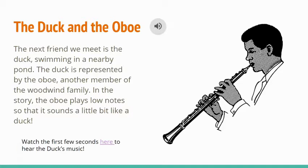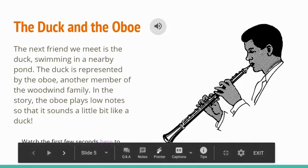In the story, the oboe plays relatively low so that it sounds a little bit like a duck might sound. It's kind of a stretch, but it does sound somewhat duck-like. There we see a gentleman holding an oboe.